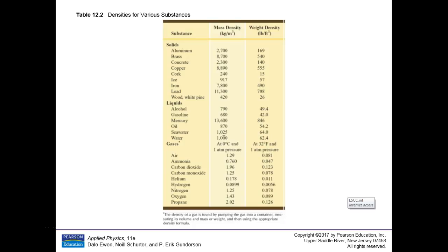Then we move to density — that's what table 12.2 is referring to. Density is a property for all three states of matter. Solids, liquids, and gases all have density. For solids and liquids they can pretty much define what material you're talking about. For a pure gas, yes it will as well, but gases diffuse so easily it's hard to keep them absolutely pure.